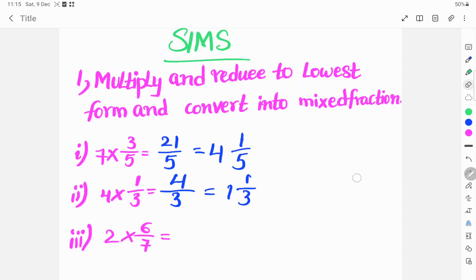Another sum. 2 into 6 by 7 is equal to, 6 twos are 12. Denominator is 7.